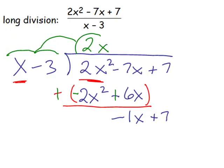Now, we divide x into negative 1x. And that will go a negative 1 times. We multiply negative 1 times x is negative x. And negative 1 times negative 3 is positive 3.